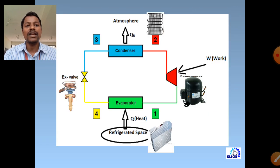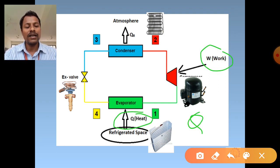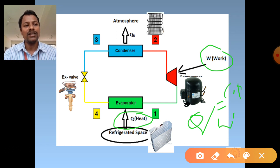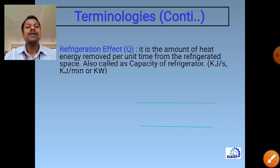Therefore, heat rejected equals heat absorbed from the cold space plus the work input to the compressor. This is the fundamental energy balance of a refrigerator.